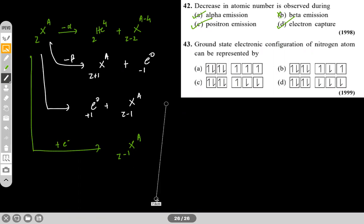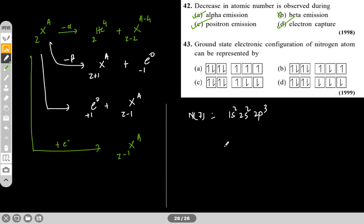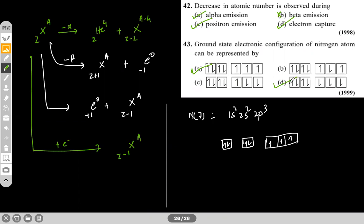The ground state electronic configuration of nitrogen atom: nitrogen has 7 electrons — 1s², 2s², 2p³. The 2p has three electrons which, according to Hund's rule, occupy orbitals singly with parallel spins. The representations showing this correctly are options A and D — both are correct. These are basic questions and the next session will cover higher level questions. Thank you guys.